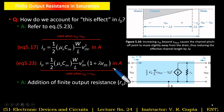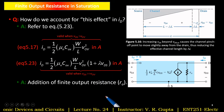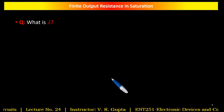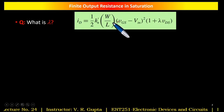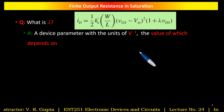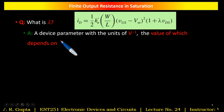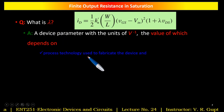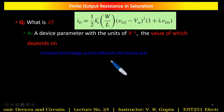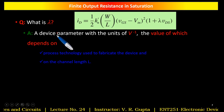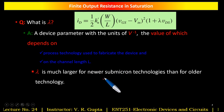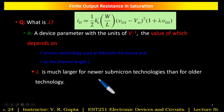Now let's see the effect of channel length modulation on the ID vs VDS characteristic curves. The parameter λ is a device parameter with units of reciprocal volts. Its value depends on two things: the process technology used to fabricate the device, and the channel length L. Lambda is much larger for newer submicron technologies than for older technologies.